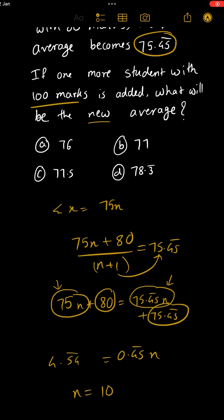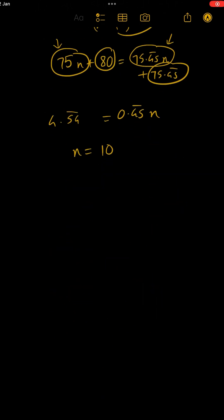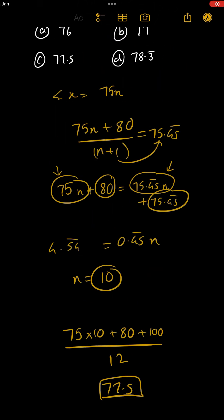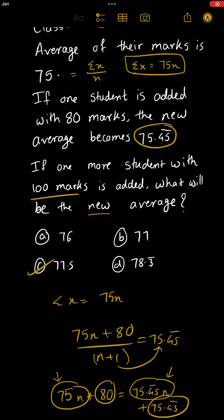Now they're asking: if one more student with 100 marks is added, what will be the new average? The current total is 75 × 10 = 750. Plus one student with 80 marks and one more with 100 marks. Total students are now 10 + 1 + 1 = 12. So the new average is 930 upon 12, which is 77.5 — option C.